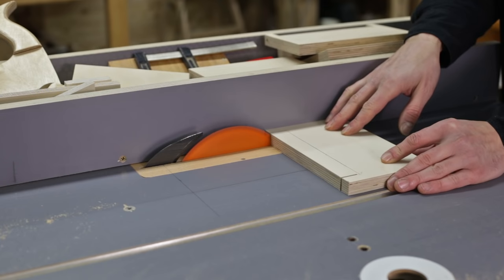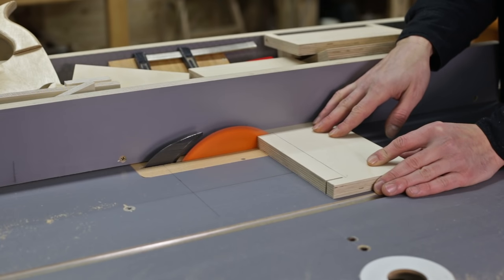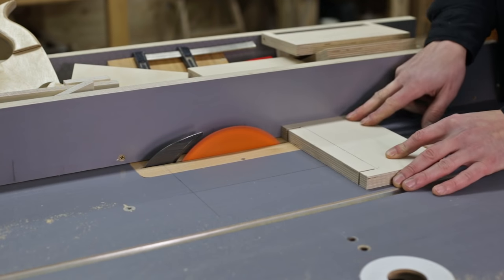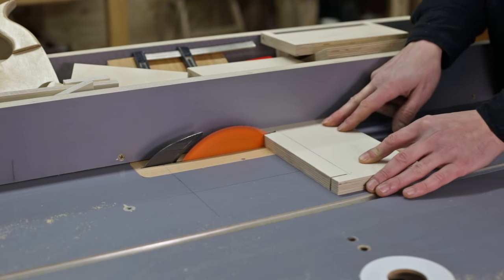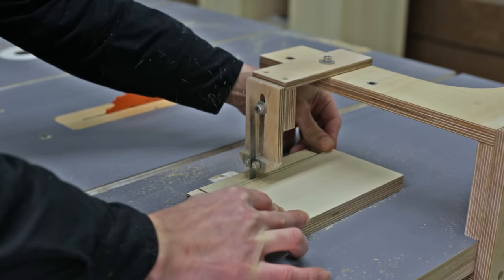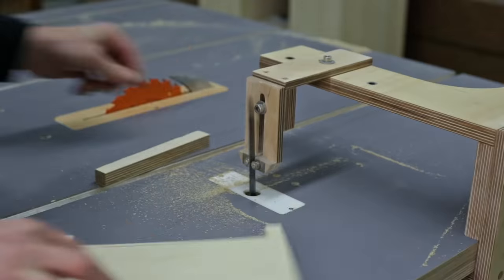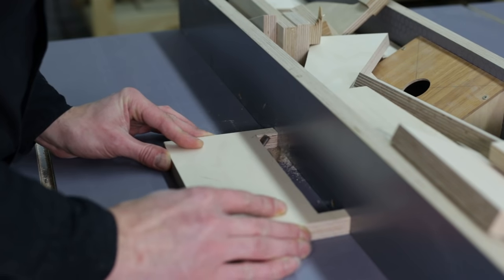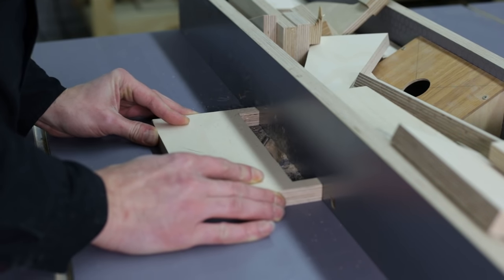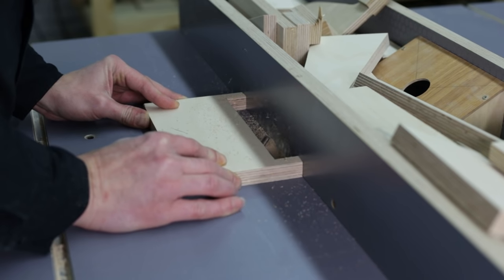Now, I'll continue working on the sanding table. I cut this piece like this, and having tilted the router, I do this milling that will allow me to tilt the table up to 45 degrees.